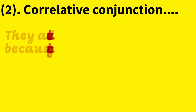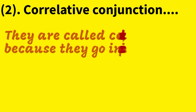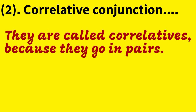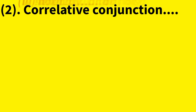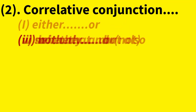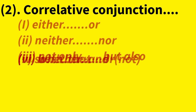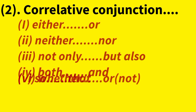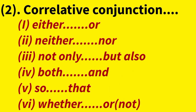They are called correlative because they go in pairs. Correlative conjunctions go in pairs — two conjunctions paired together — like either...or, neither...nor, not only...but also, both...and, so...that, whether...or not.